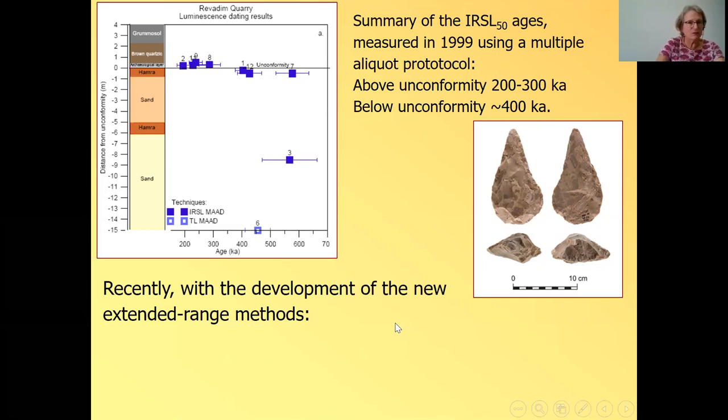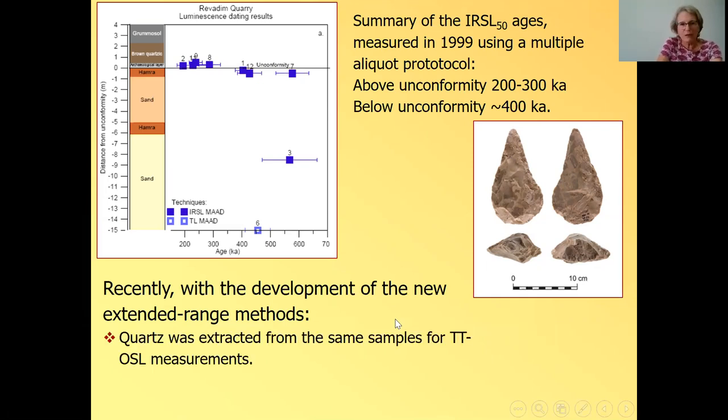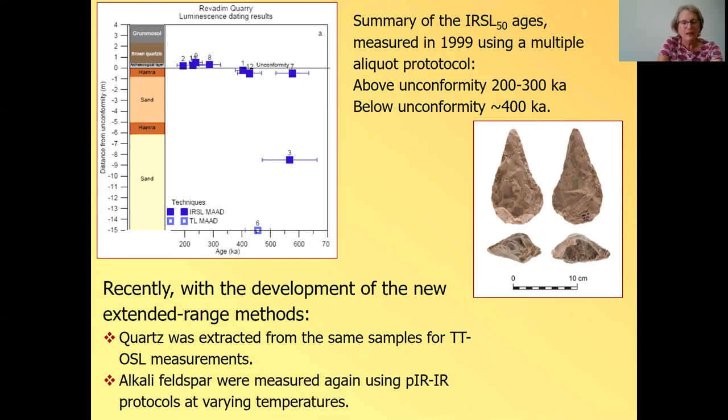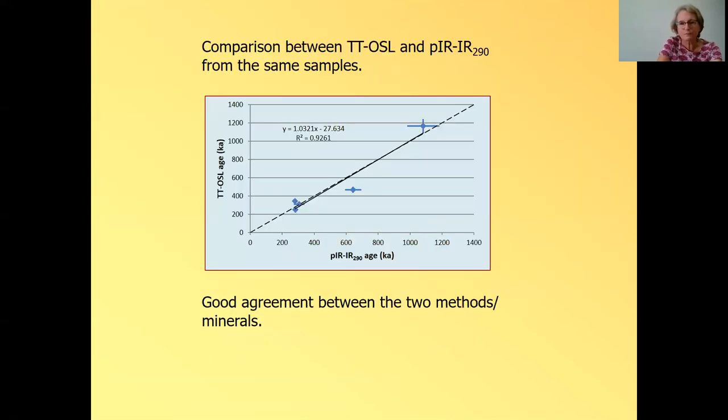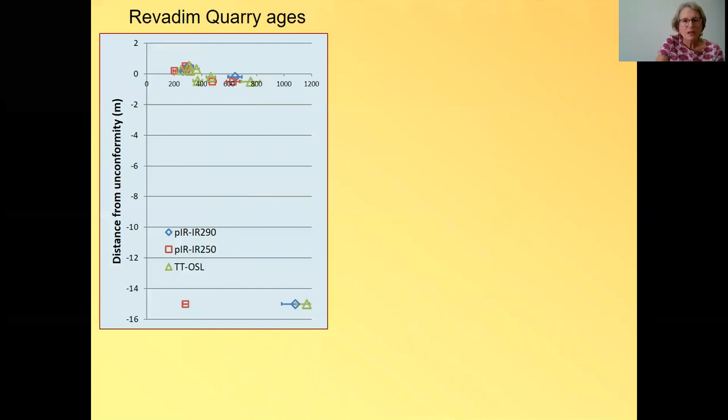So, but recently, with the development of the new extended range dating, I took back, took out the samples from storage, we extracted quartz from the same samples for TTOSL, and we took the feldspars, which were in my storage and measured post-IR protocols at varying temperatures. First, I want to show a comparison between the TTOSL ages and the post-IR-IR at 290 degrees for five samples from Revadim. And there's a really nice correlation, which makes me very happy when you get two methods, which are a little bit different in the dose rate and in the signal and all kinds of assumptions, and they come out to be the same. So here are the new ages. And I'll show you in a minute the blow up of this section, which is of interest, but I just want to show you the entire section and the sample from the base of the section.